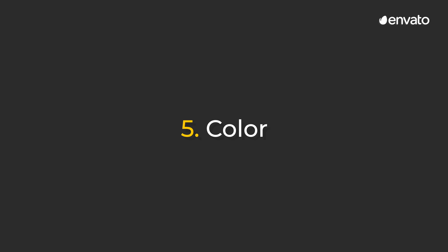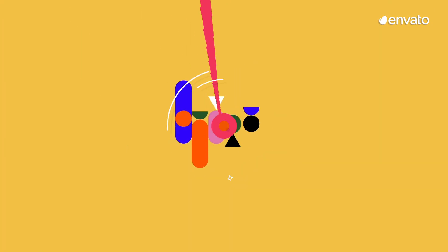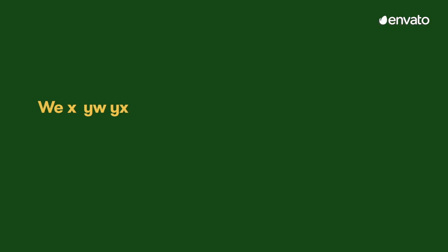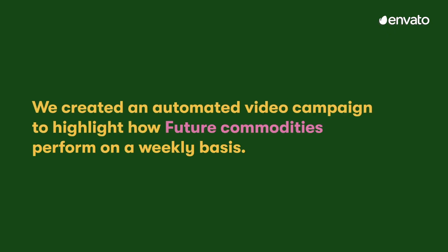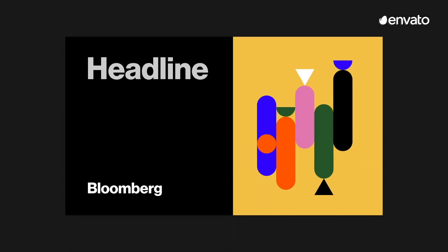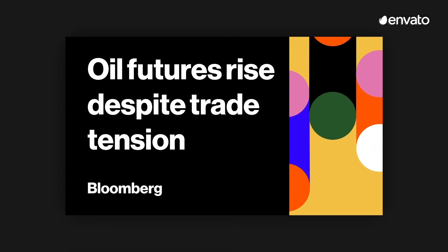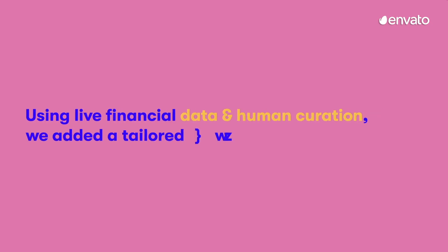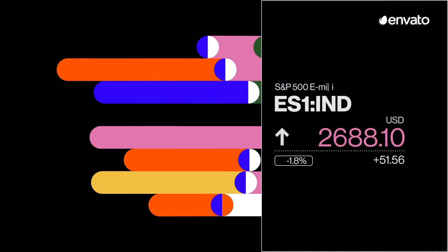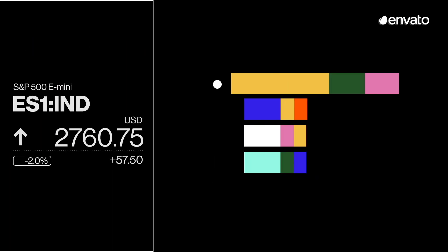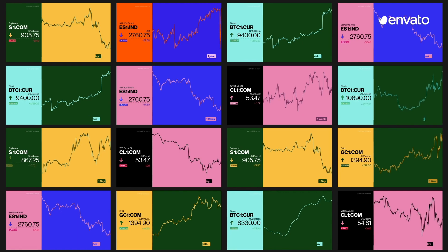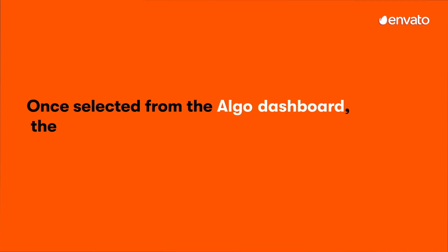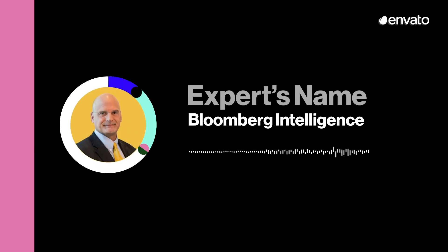Color can make, break or date a video instantly. Bold, impactful colors are in, especially when paired with strong minimal typography. These data visualization videos, a collaboration between Algo, a cloud platform that creates real-time, data-driven videos at scale, and Illo Studio, an Italian design studio, are a great example. The Financial Recap video series analyzed Bloomberg's futures market and were automated and published every Monday right after market closure.